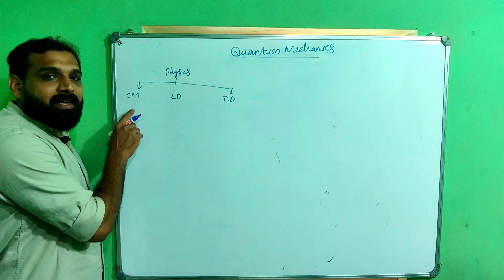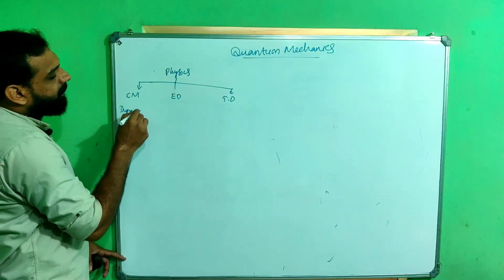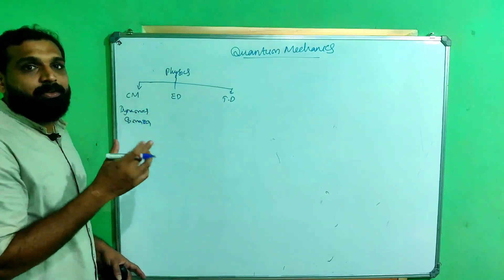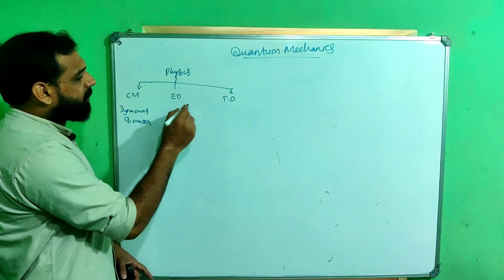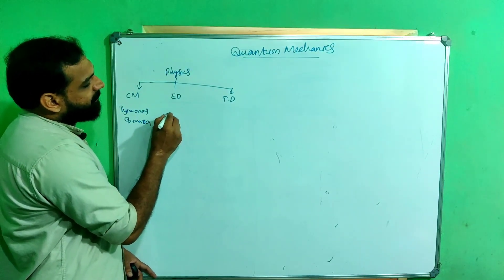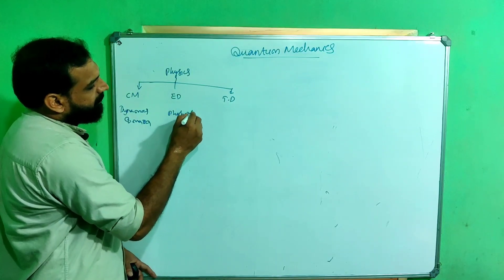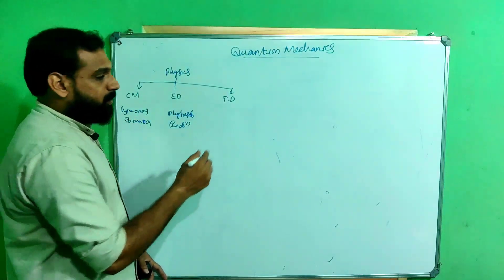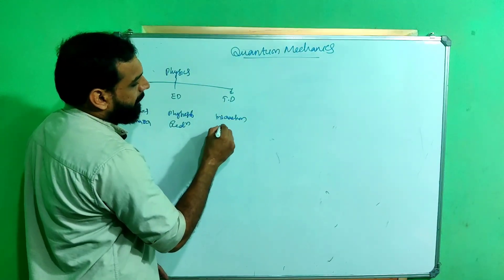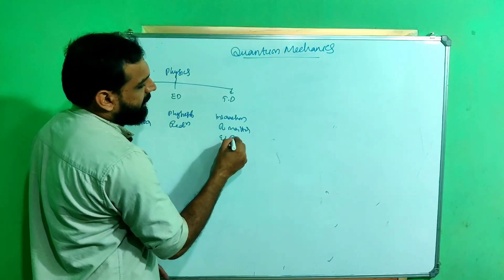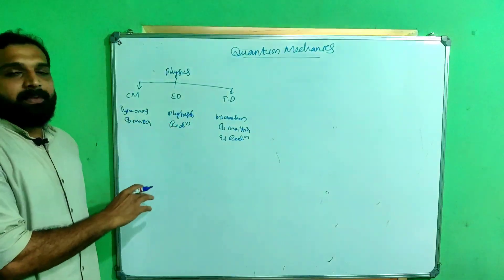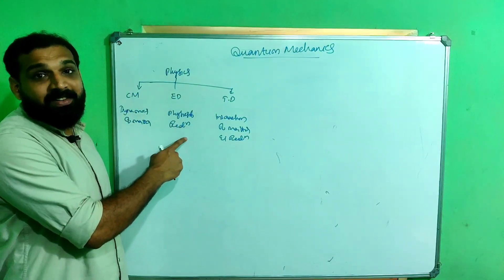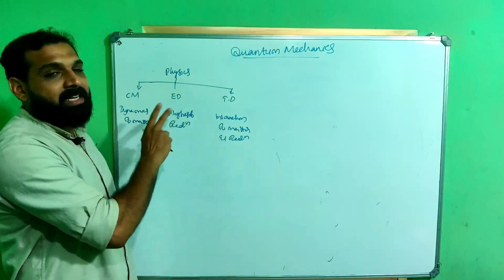Classical mechanics deals with the dynamics of matter. Electrodynamics — or more accurately, Electromagnetic Theory — deals with the physics of radiation. And Thermodynamics deals with the interaction between these two: the interaction of matter and radiation.